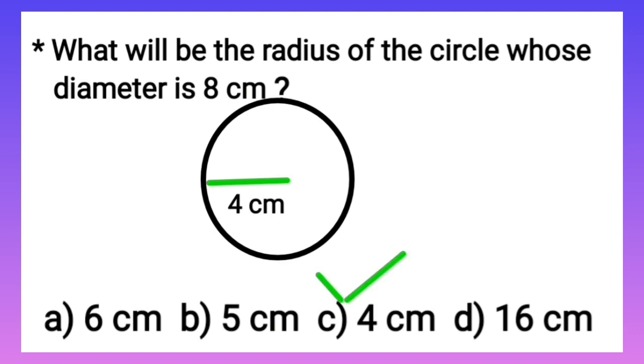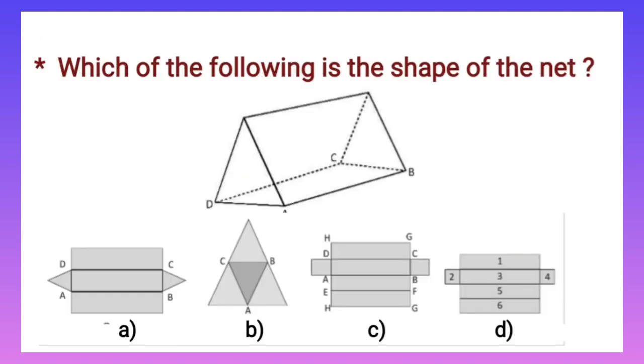The next question is: Which of the following is the shape of the net? Children, look at this net carefully. The net consists of three rectangles and two triangles. So let's see, is it option A...